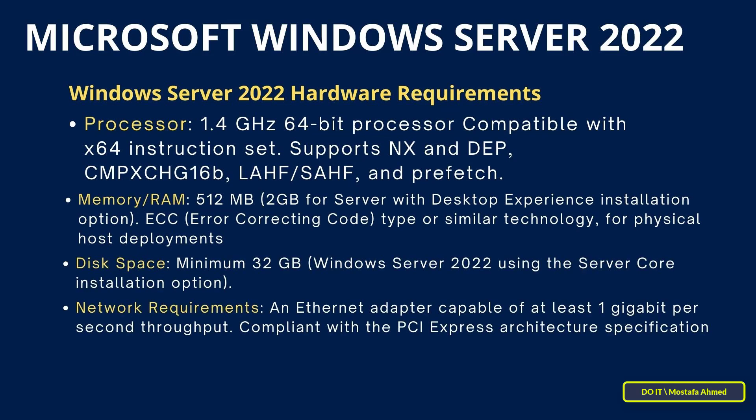Third, for disk space, a minimum of 32 GB is required for Windows Server 2022 using the server core installation option. Regarding network requirements, an Ethernet adapter capable of at least 1 Gbps transfer speed, compliant with PCI Express architecture specification, is needed.